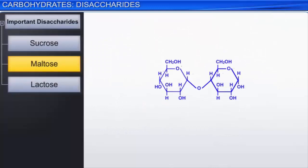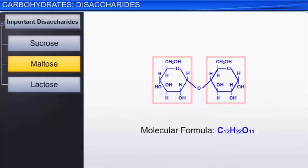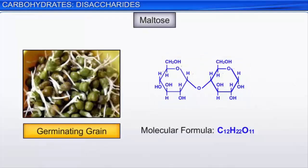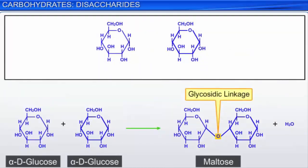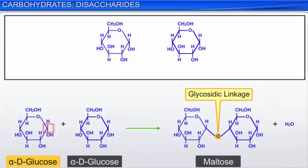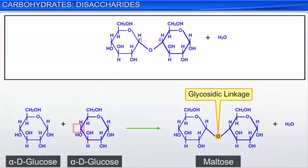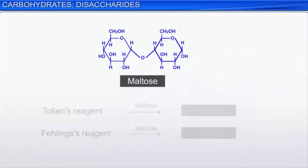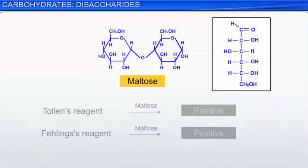Maltose is another important disaccharide which contains two glucose units. Its molecular formula is C12H22O11. It is the least common naturally occurring disaccharide, found in germinating grain. The glycosidic linkage in maltose is formed between the carbonyl group of C1 of alpha-D-glucose and the hydroxyl group of C4 of the second alpha-D-glucose. The availability of a free aldehyde group at C1 of the second glucose in its solution allows maltose to reduce Tollens' and Fehling's reagents. Hence, maltose, unlike sucrose, is a reducing sugar.